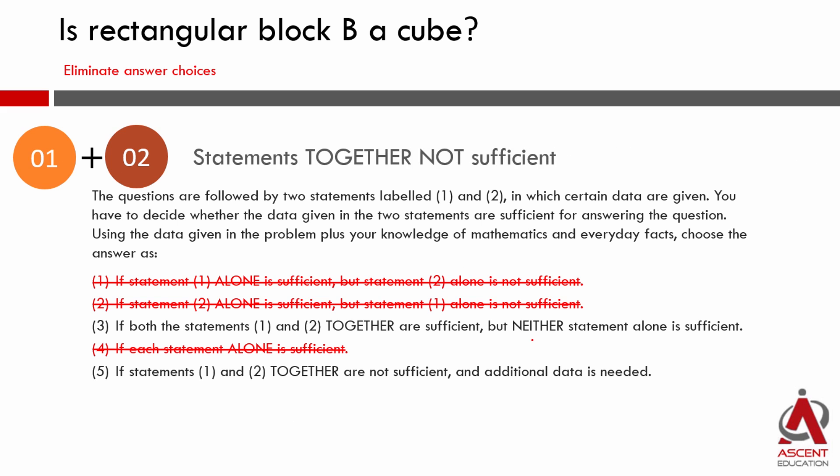The combined statements are still not sufficient, so we eliminate choice 3. The answer is choice 5 — neither statement alone nor both together are sufficient to determine whether the rectangular block is a cube.